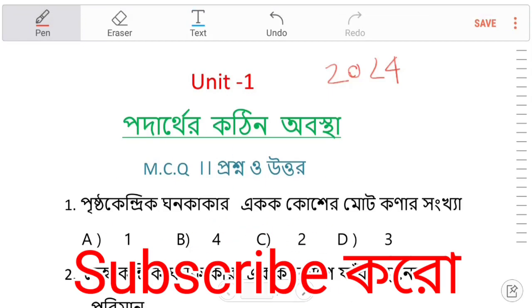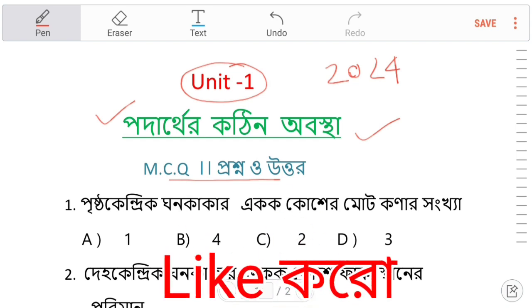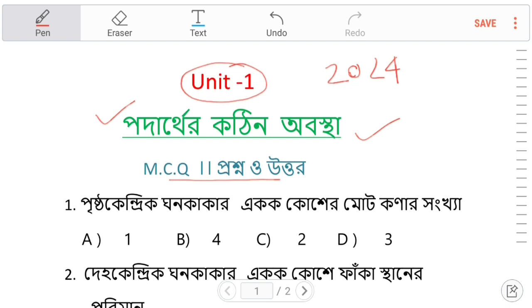In 2004, this is the chemistry — unit 1. This is the first part of the chemistry. We have to go to the MCQ post.